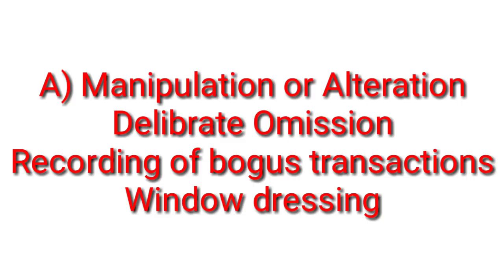Fraud is divided into two main types: manipulation and misappropriation. Under manipulation, there are actually three sub-types which we are going to discuss with examples.